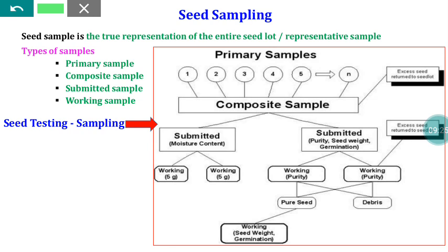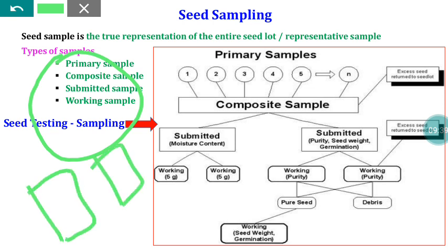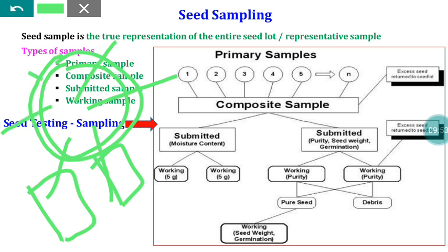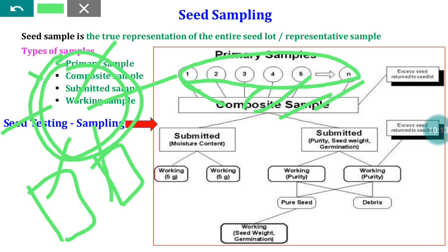The seed sampling methodology involves different levels of sampling: primary sample, composite sample, submitted sample, and working sample. From the seed lot we have to take the prescribed number of primary samples. If a large quantity is stored, we take more primary samples from various depths and locations. After taking all primary samples, they are mixed together to form the composite sample.